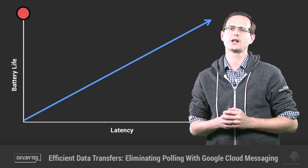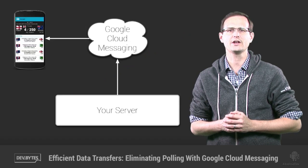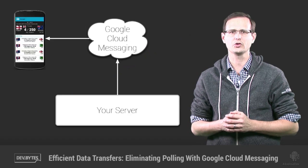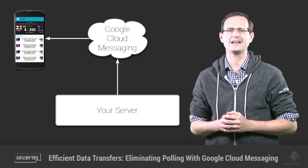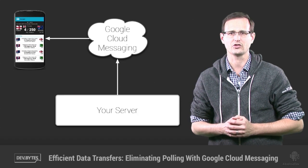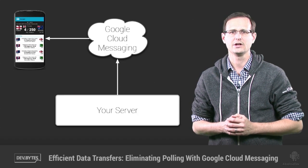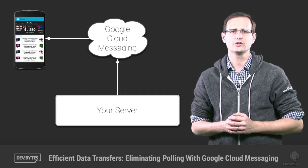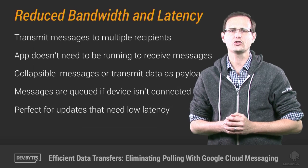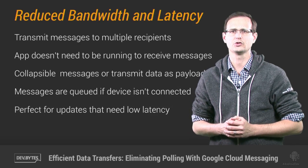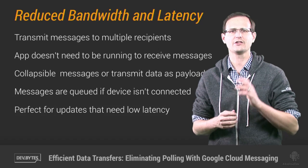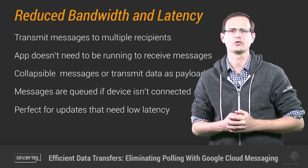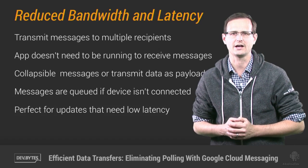Google Cloud Messaging helps you do this by offering a way to send messages from your server to any installed instance of your app. As a result, you can stop polling, which will improve battery life and also improve the freshness of your app.